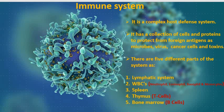Bone marrow is a spongy substance found in the center of bones. The bone marrow is extremely important to the immune system because all the body's blood cells, including T lymphocytes and B lymphocytes, originate in the bone marrow.